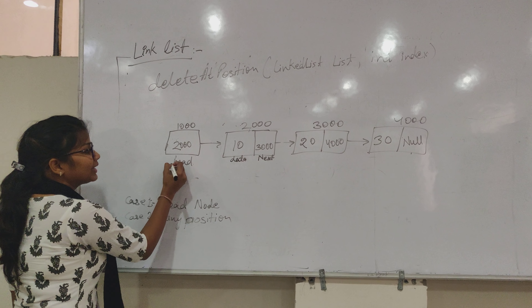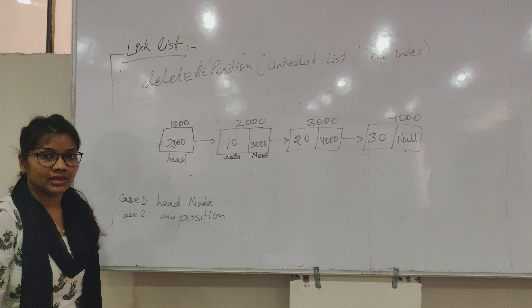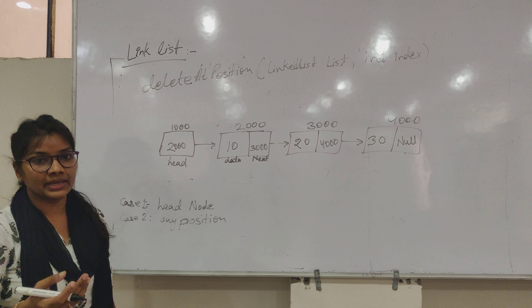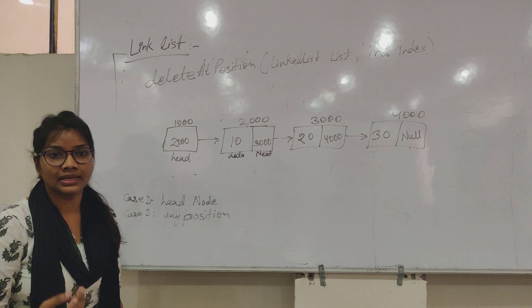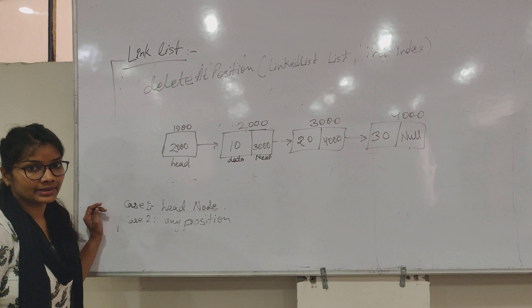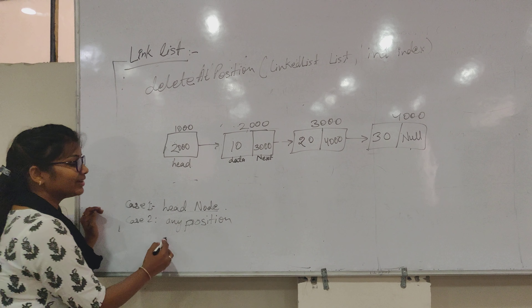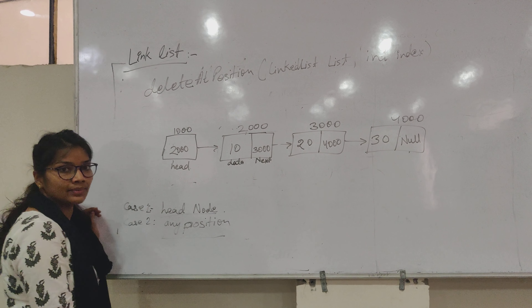So basically, you will create the linked list, print it, traverse it, and see that the data is saved. Then we will do deletion. Deletion can be done in different ways: you can delete the head node, or perform deletion at any position.